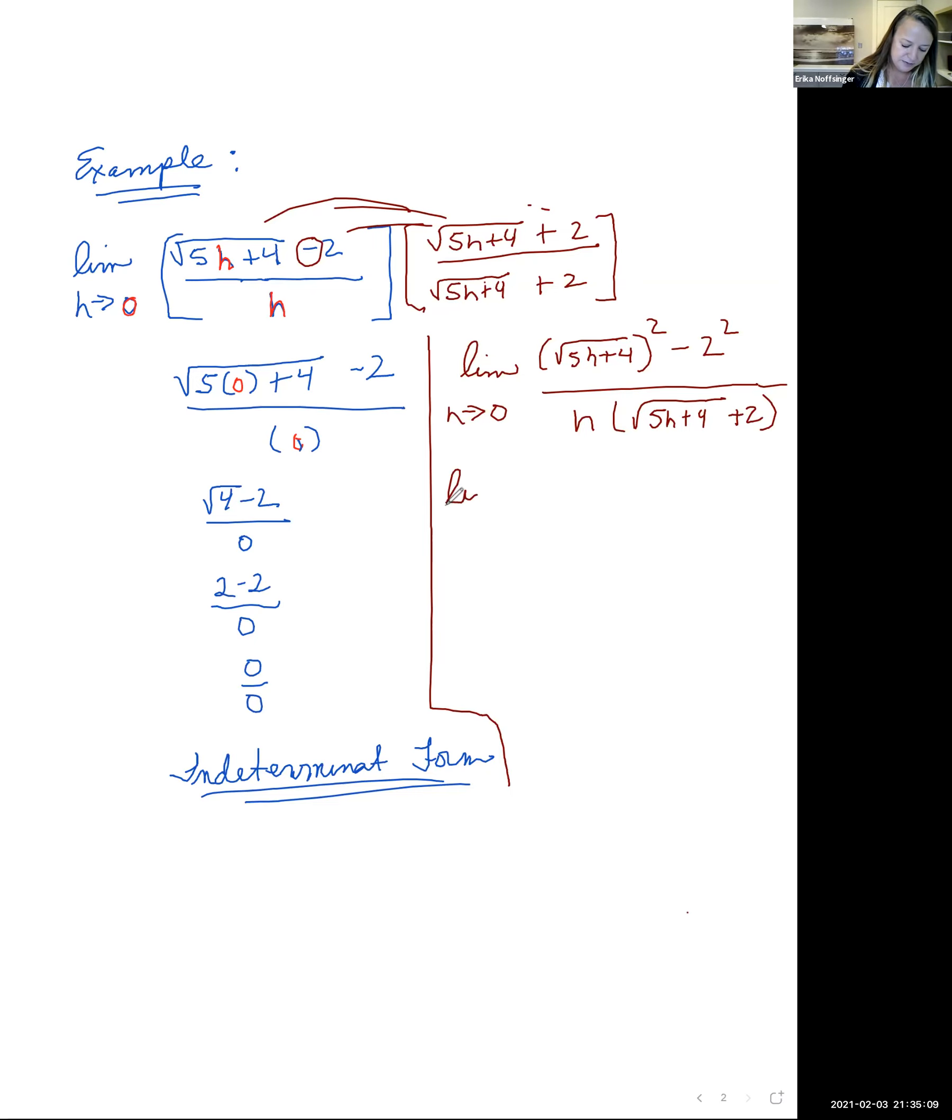So bringing down the limit, because we still haven't plugged in our value yet, squaring a square root just leaves us what's underneath the radical. So we're left with the radicand, this 5h plus 4 minus, just squaring the 2, 2 squared is 4, all over this denominator, h, all times that square root of 5h plus 4 plus 2.